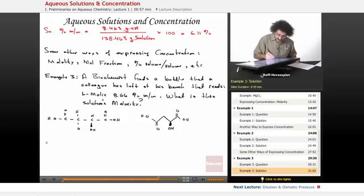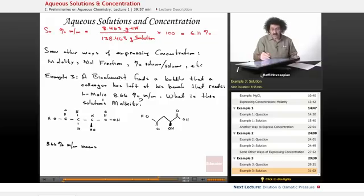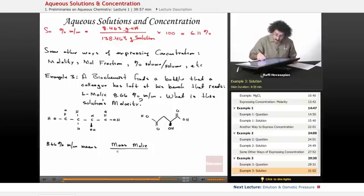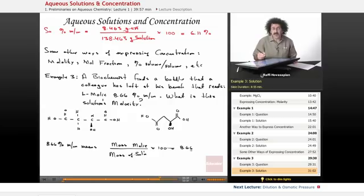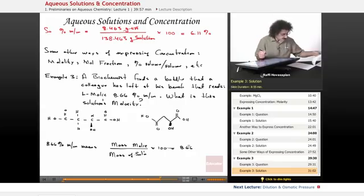8.66% by mass means the following. The mass of the malic acid over the mass of solution times 100 is equal to 8.66. They gave us this. This is the definition. So I want to start with this. I'm going to work my way back.